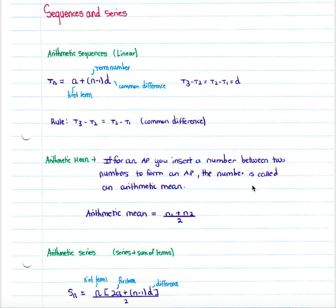We'll cover the sequences and series section of the math syllabus. The most basic form of a sequence is the arithmetic sequence, also called a linear sequence. The general formula for a sequence of this nature is: tn, being any term you're looking for, equals a — the first term — plus n minus 1 times d, where d is the common difference.